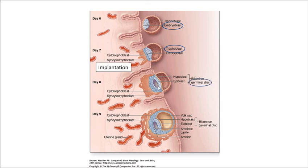The germinal disc — 'germinal' means to grow — is right here. You have the yolk sac in this area. Also pay attention to the amniotic cavity as we go through all of this, because the amniotic cavity is going to become something very, very important. We will continue next time. We've gotten through implantation, so baby's not going anywhere. Until next time.